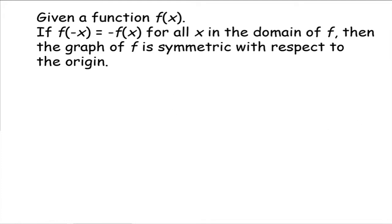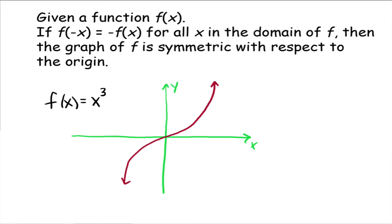Take for example f of x equals x cubed. If you take 1 and negative 1: when x is 1, your y value is 1; when x is negative 1, your y value is negative 1. Opposite x values give you opposite y values. If you take 2 and negative 2, your y values are 8 and negative 8. So this graph is said to be symmetric with respect to the origin.